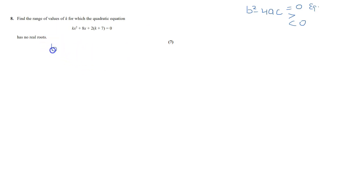So we'll apply this condition here. b square minus 4ac is less than 0. And it is for the standard equation ax square plus bx plus c is equal to 0. Now here a is equal to k, b is equal to 8, and c is equal to 2k plus 7.